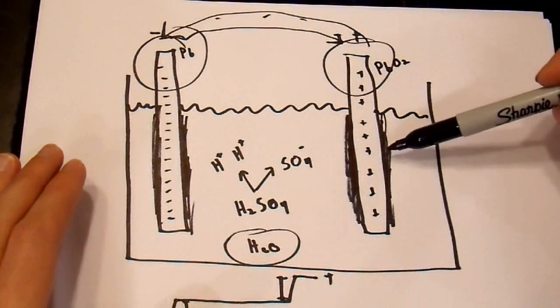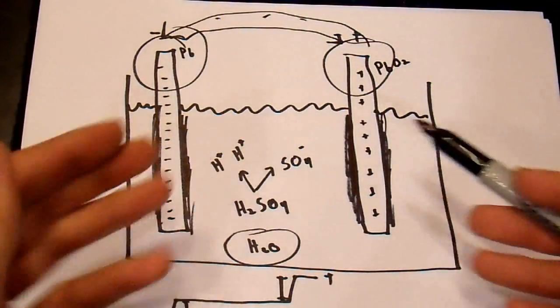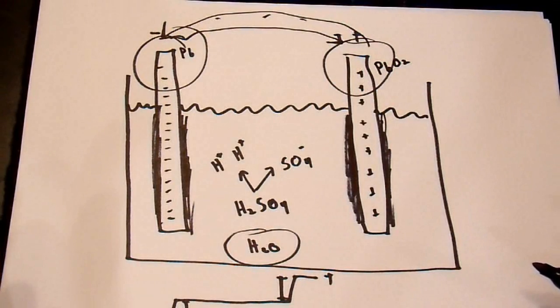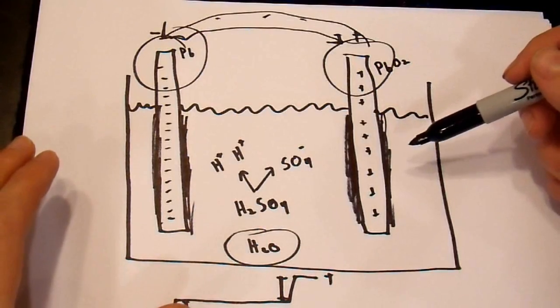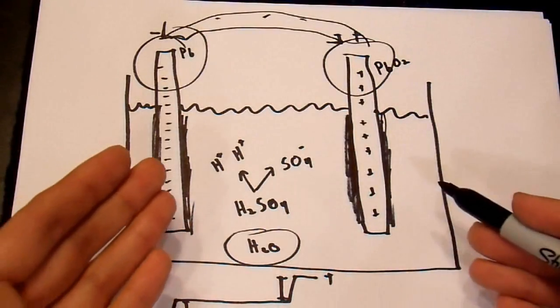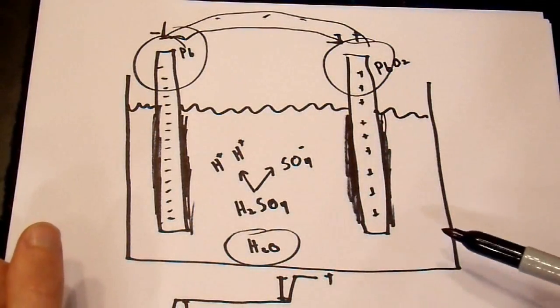If you have more lead to react, and you have more acid to react with, you end up with a higher capacity battery. And, that's why, excluding some other factors that I won't go into here, basically, you can tell how much capacity a battery has by its weight. Because, it's the amount of lead and the amount of acid that you put into the battery.